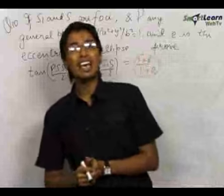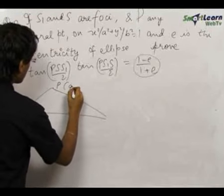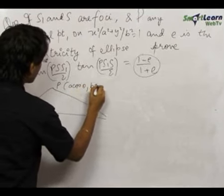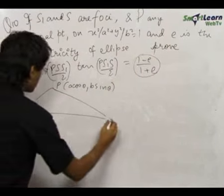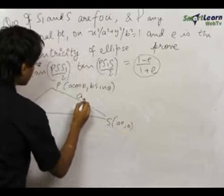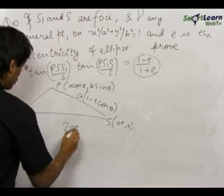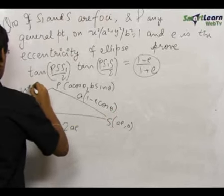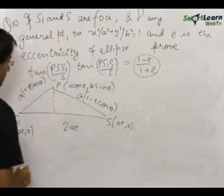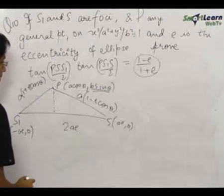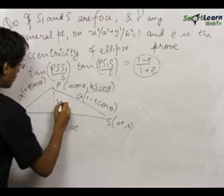As we did in the ninth problem, let us make the figure. Point P is at (a cosθ, b sinθ), S₁ is at (-ae, 0), and S is at (ae, 0). The length PS₁ equals a(1 - e cosθ) as proved earlier, the distance SS₁ is 2ae, and PS equals a(1 + e cosθ). The perpendicular height from P to the x-axis equals b sinθ, since S₁ and S lie on the x-axis.